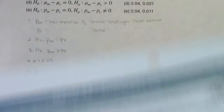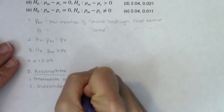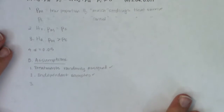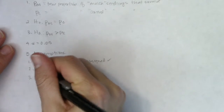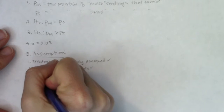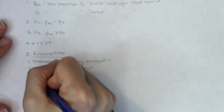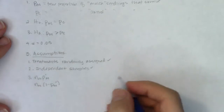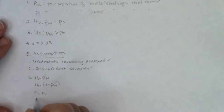I'll write 'independent samples' and then start on assumption three. I need N sub M · p̂ sub M, N sub M · (1 − p̂ sub M), N sub C · p̂ sub C, and N sub C · (1 − p̂ sub C). In the mulch group there were 250 seedlings with a success rate of 30%, giving 75 successes — that's ≥ 10. By complement, 250 × 0.7 = 175 seedlings did not survive — also ≥ 10. For the control group, the sample proportion is 22%, giving 55 successes, and by complement, 250 × 0.78 = 195 failures. All four values are ≥ 10.